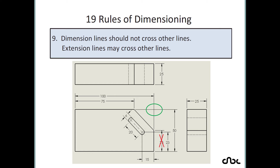Rule number 9: dimension lines should not cross other lines, but extension lines may cross other lines. Extension lines — the lines extending from the part — can cross each other, but the dimension lines themselves should not cross each other. Place your dimensions accordingly to avoid this tangling.